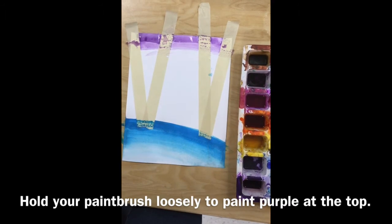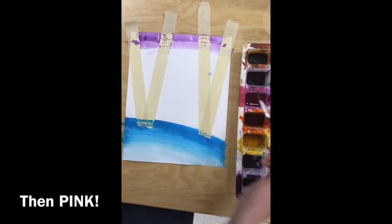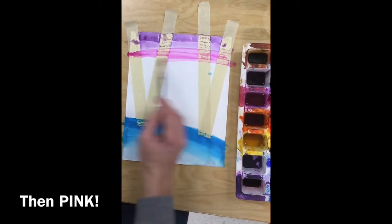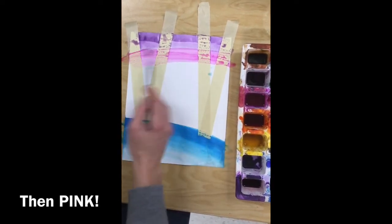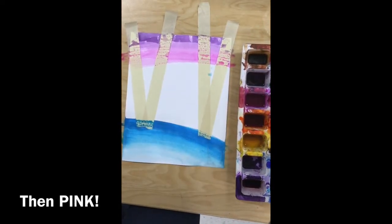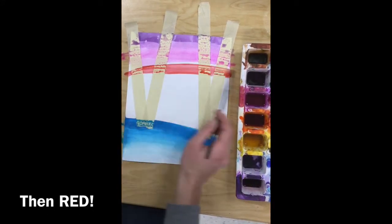While this watercolor is still wet, you'll grab pink for your next color. Blend it slightly into your purple. I hold my brush loosely when I do this to make arcs.